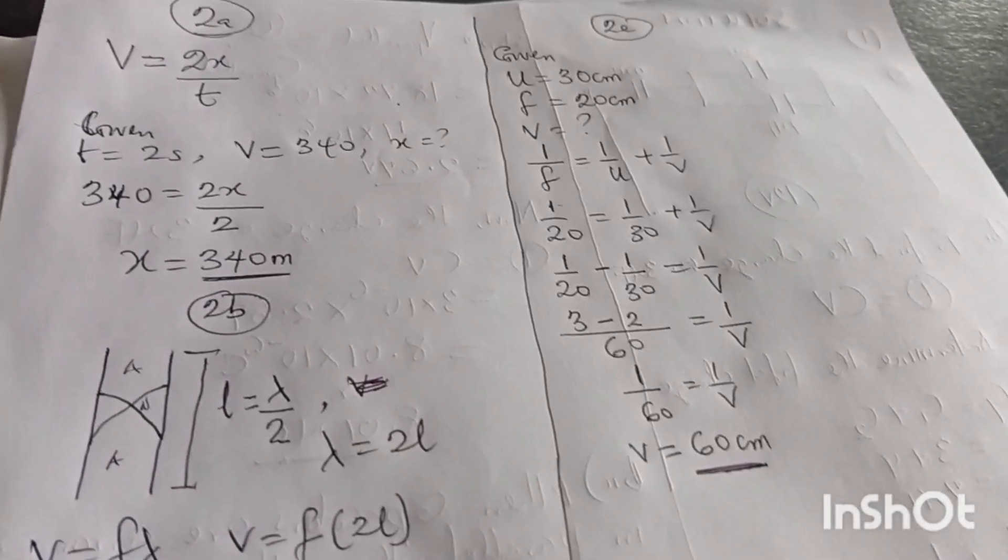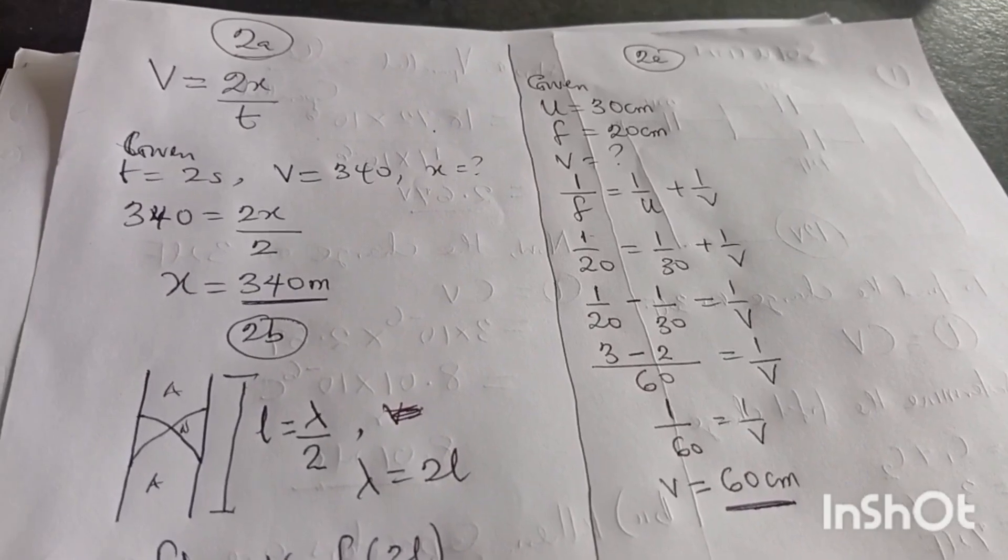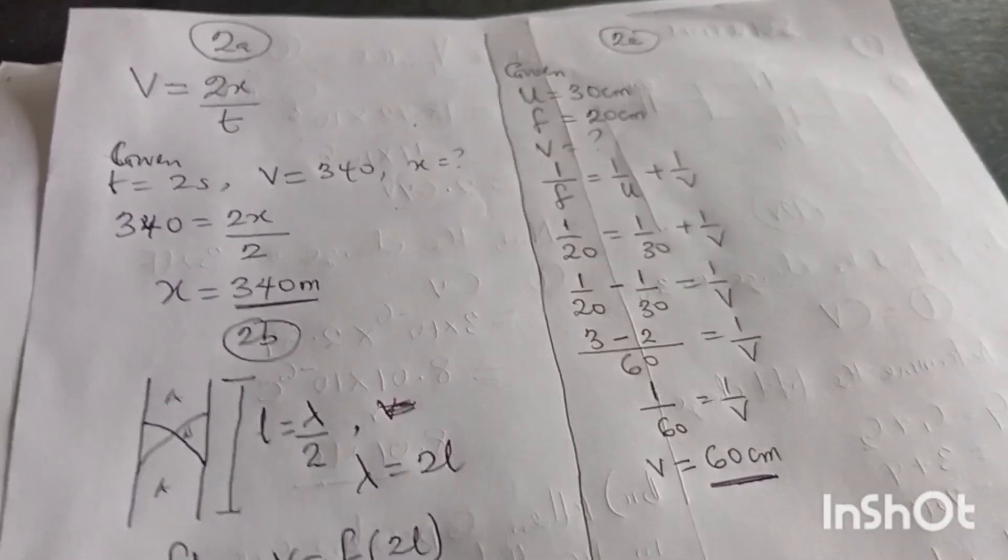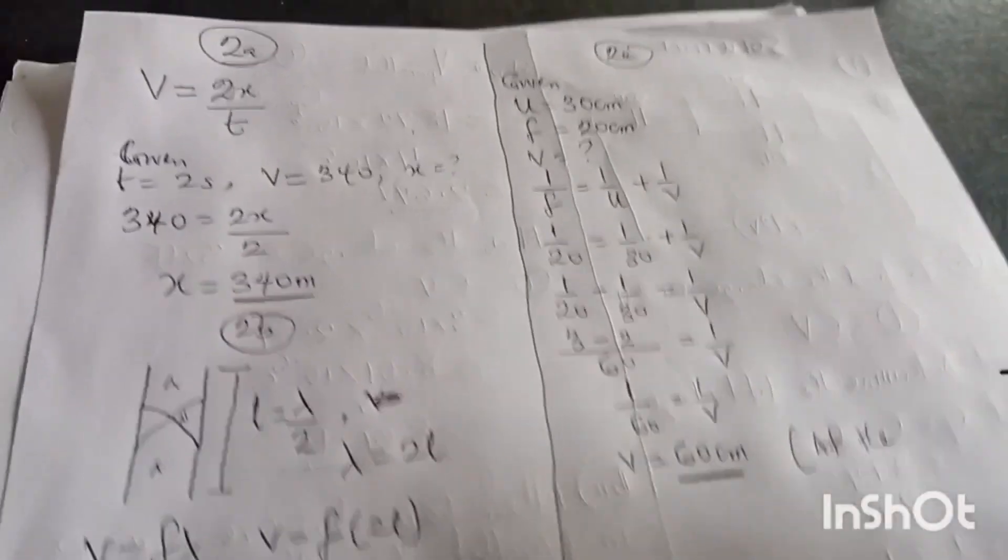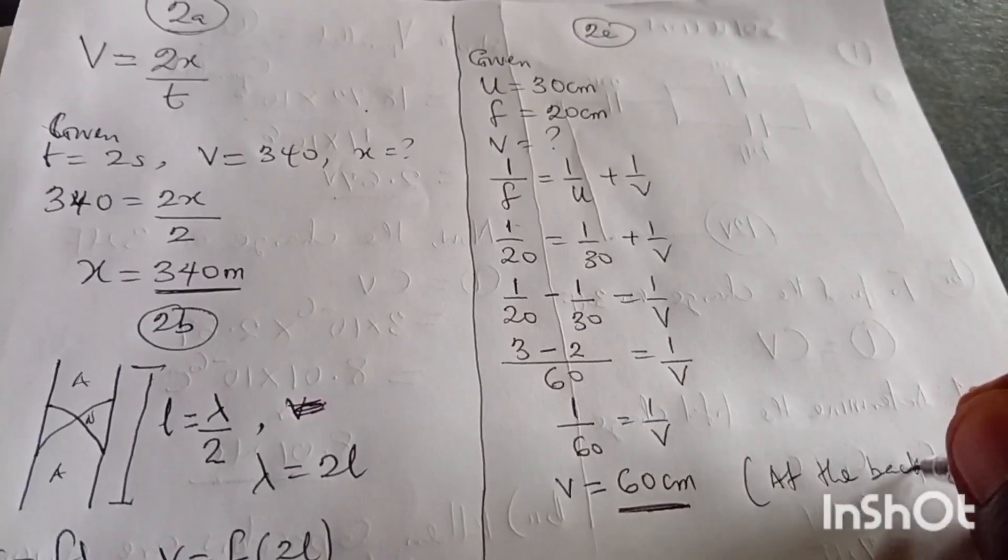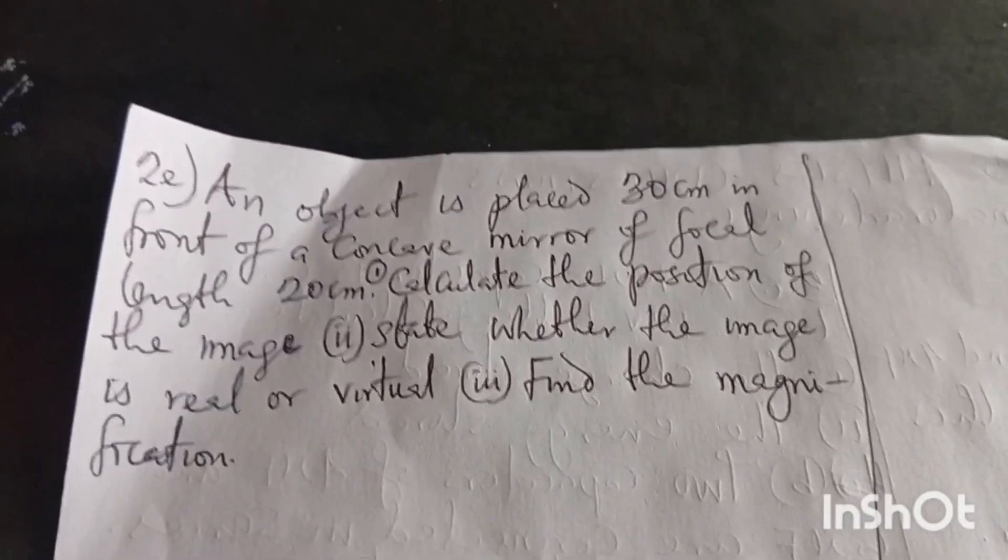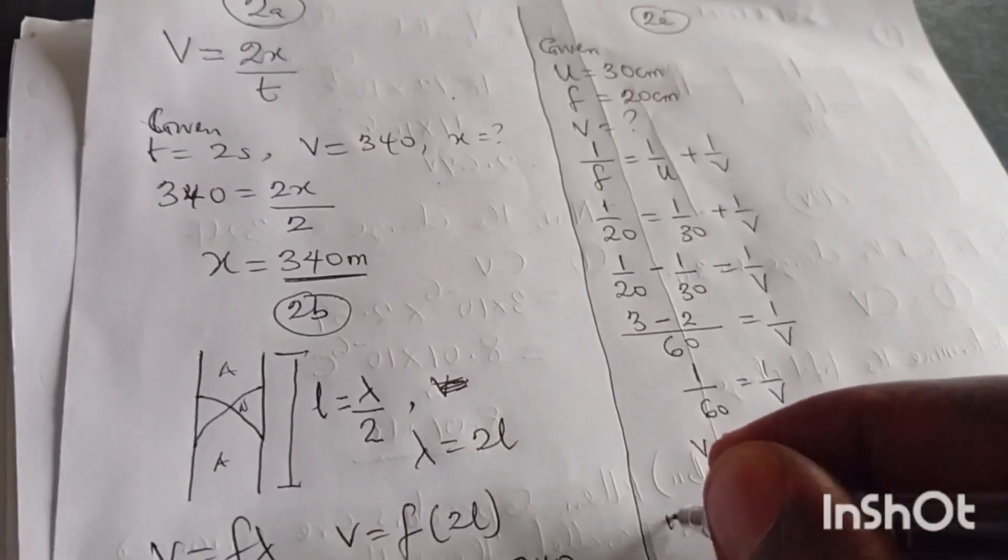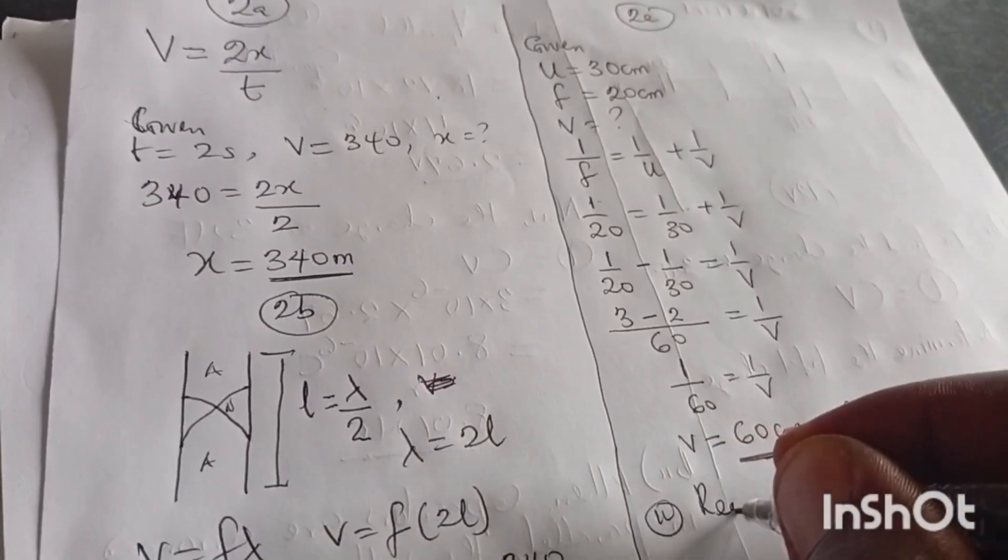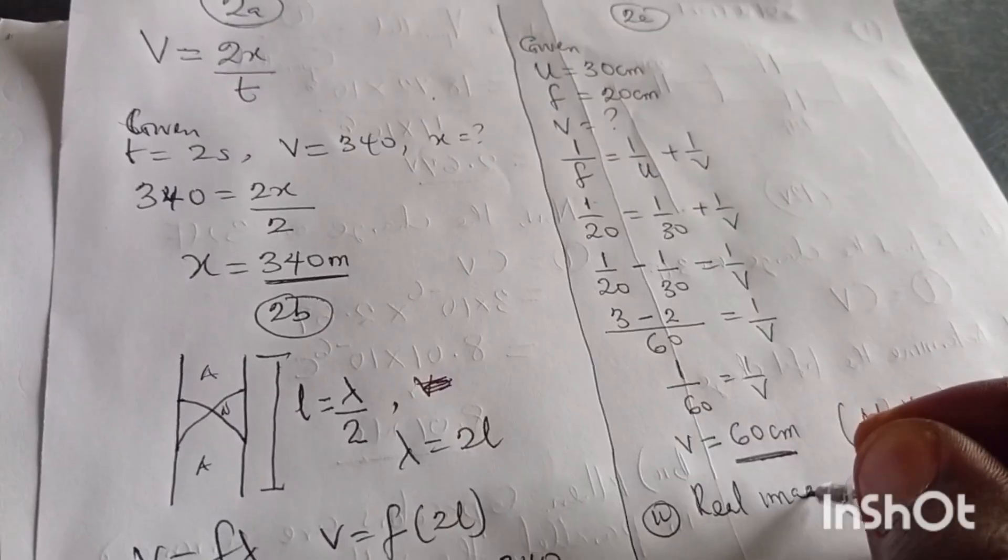So cross multiply, V equals to 60 centimeters. You can see that where the image is formed is at the far, far back of the C. And that is set. Which, where is the position? In case you have, the position, that is at the back of C, at the back of C.